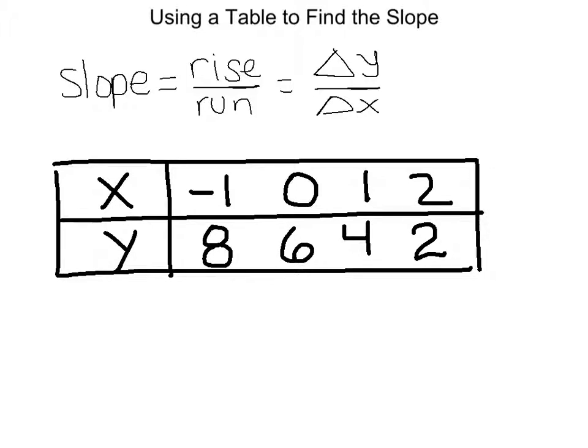So when you looked at the x values, you should have noticed that they, from one to the next, go up by one in each case. However, when you look at the y values, from one to the next, they change by two, but it's not a positive change, it's a negative change.